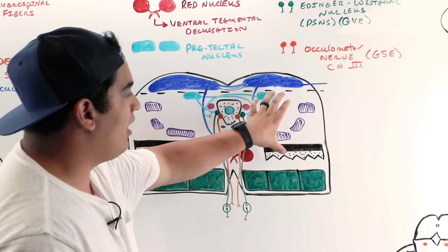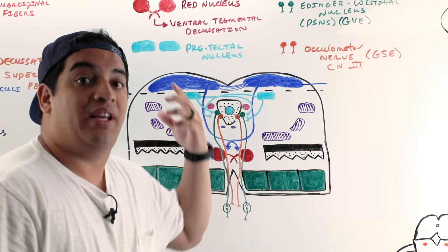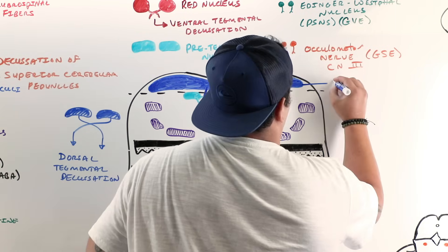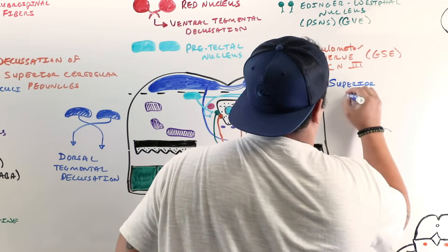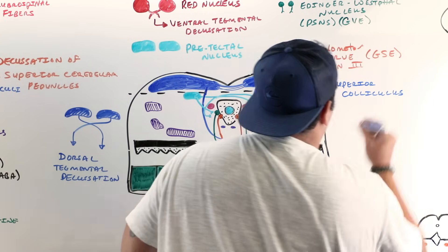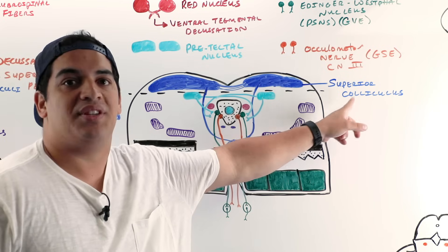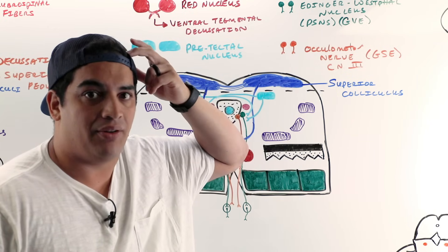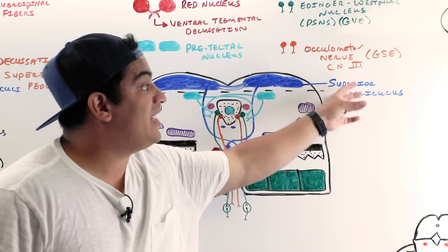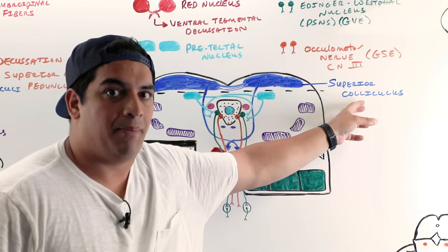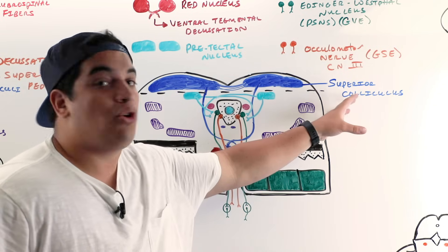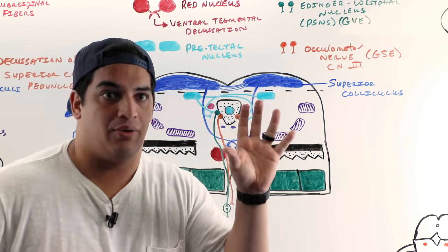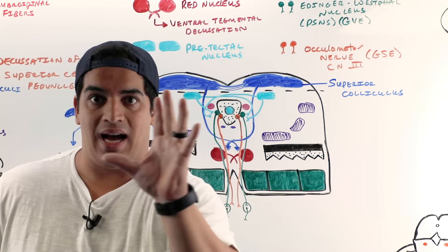Finally in the tectum at this level is the superior colliculus, which receives visual input from the retina, from frontal eye fields, and from the visual cortex in the occipital lobe. It also receives sensory information and coordinates it to help track moving objects — moving our head and eyes together to follow whatever we're watching.